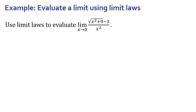Step two says we need to find a function that's equal to this and do one of the following steps. If they're polynomials, factor functions out. We can see that the numerator is not a polynomial because we have a square root in it. Step two, letter B, says if the numerator or denominator contains a difference involving a square root, we should try to multiply the numerator and denominator by the conjugate of that expression. Let's do that because in the numerator we have the square root and we're doing a difference.